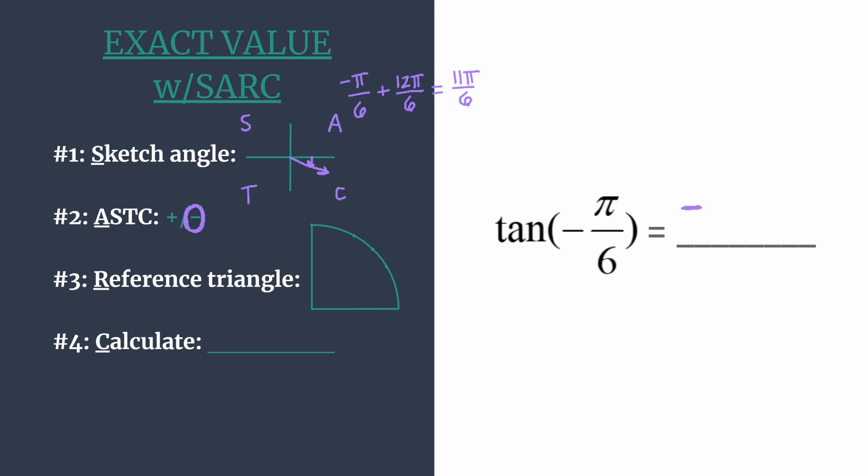Next, we find our reference triangle. To do that, first find the reference angle, which is the amount of rotation from terminal side to x-axis. We see that's π over 6.